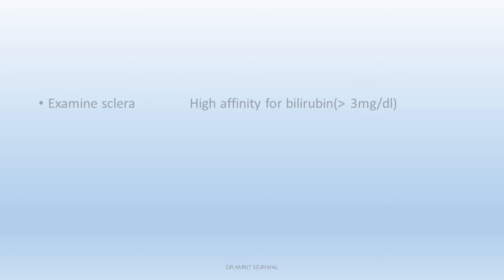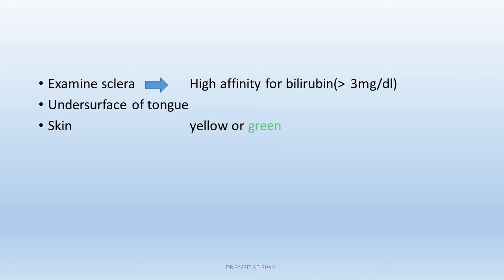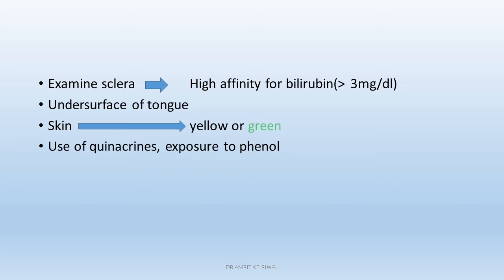Examine the sclera — it has high affinity for bilirubin, and whenever bilirubin goes more than 3 mg per deciliter, the sclera shows a yellowish tinge. You can also look for icterus on the under surface of the tongue. The skin, depending upon the level of bilirubin, may be yellow or green. Use of quinacrine or exposure to phenol can also lead to yellowish or greenish discoloration of the skin.